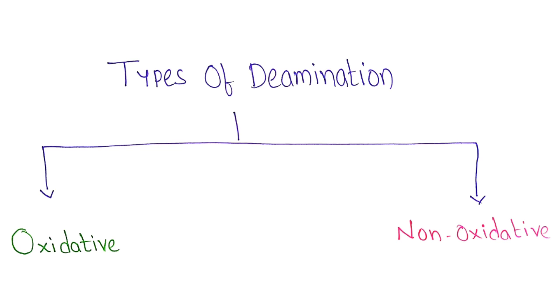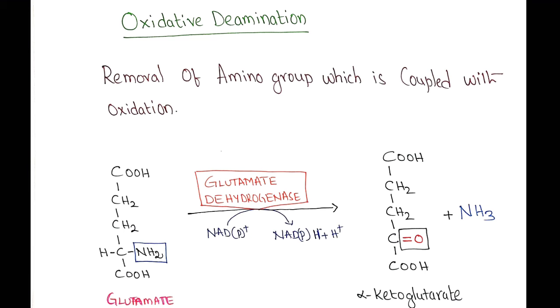In oxidative deamination, removal of amino group takes place which is coupled with oxidation. This removal requires the help of coenzyme, it may be NAD or NADP. The most important enzyme involved in the oxidative deamination is glutamate dehydrogenase, which converts glutamate into alpha-ketoglutarate.